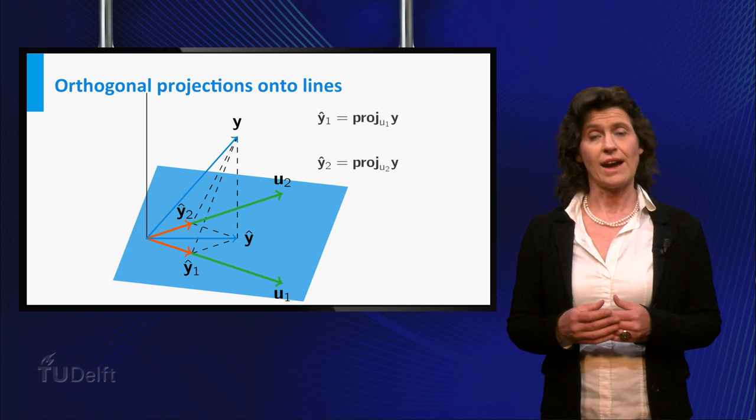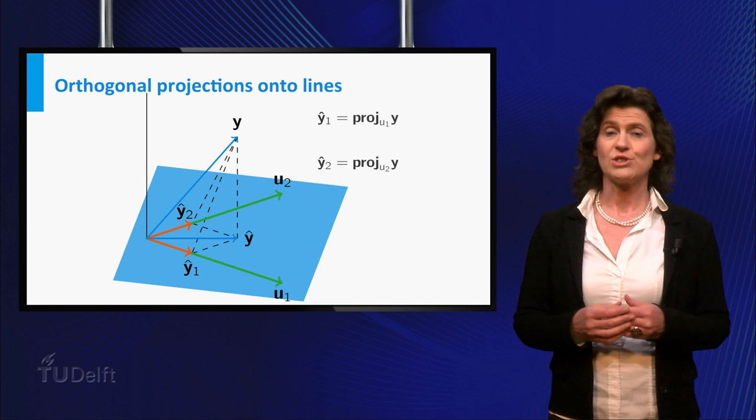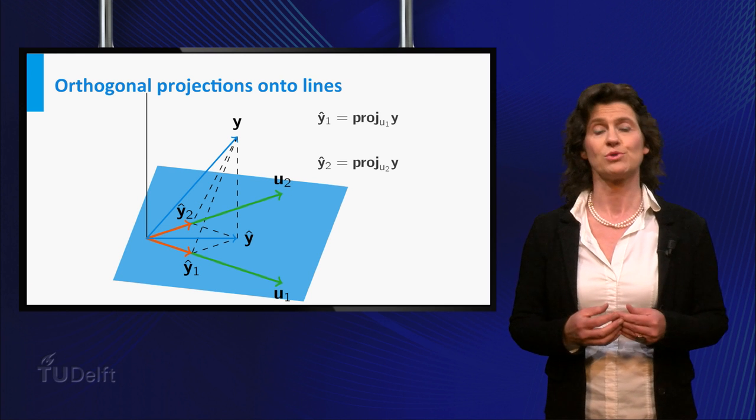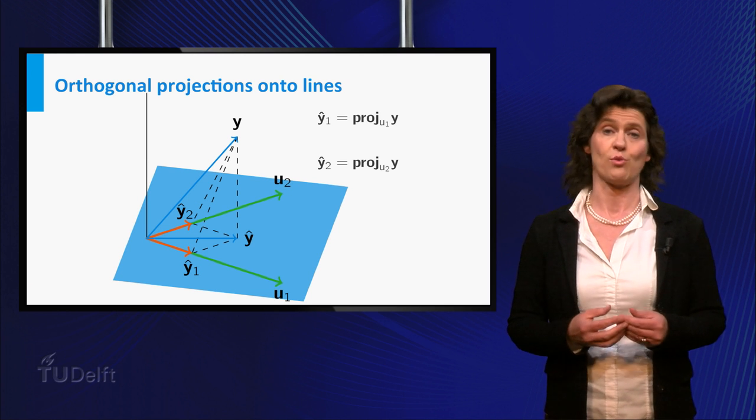So denote Y1 hat as the projection on U1 of Y and Y2 hat as the projection on U2 of Y.